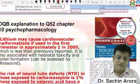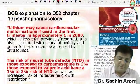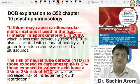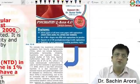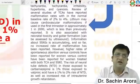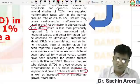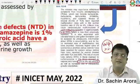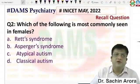In DQB, the explanation states that lithium may cause cardiovascular defects in 1 in 2000, while Valproate causes one to two percent. A similar question is in the recently released Psychiatric Q Bank 4.0, which also mentions lithium causes 1 in 2000 and Valproate 1 to 2 percent. So very straightforwardly, Valproate is more teratogenic than lithium. Hence the answer to this question is Valproate.